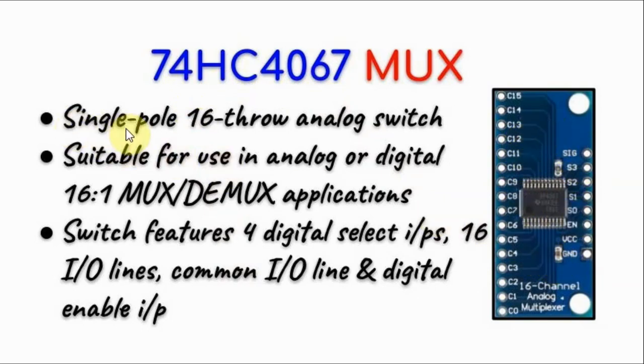The IC is a single-pole 16-throw analog switch suitable for use in analog or digital 16-to-1 multiplexer/demultiplexer applications. The switch features four digital select inputs S0, S1, S2, and S3, 16 IO lines from C0 to C15, a common IO signal line, and a digital enable input.